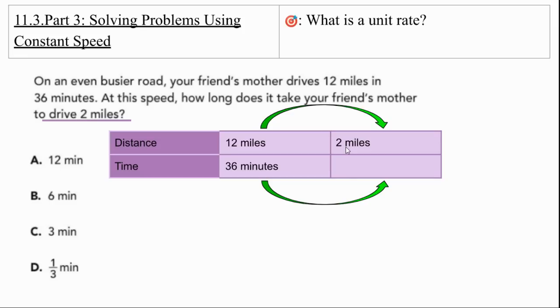12 to 2. Bigger or smaller. Smaller. Multiplication or division? Division. 12 divided by what equals 2? 12 divided by 6. And we do the same thing to the 36. 36 divided by 6 is 6 minutes. So it takes 6 minutes to drive 2 miles.